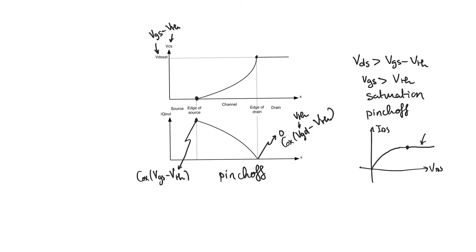These two graphs are important because current I equals Q times V — it is the product of the amount of charge in the channel and how fast that charge moves. We have a drawing of Q, and we also effectively have a drawing of velocity, because V equals μ_N × E, and E equals dV/dx, so velocity equals μ_N × dV/dx. We have the graph of V versus x, so the slope of V through the channel indicates the velocity at which the charges are moving.